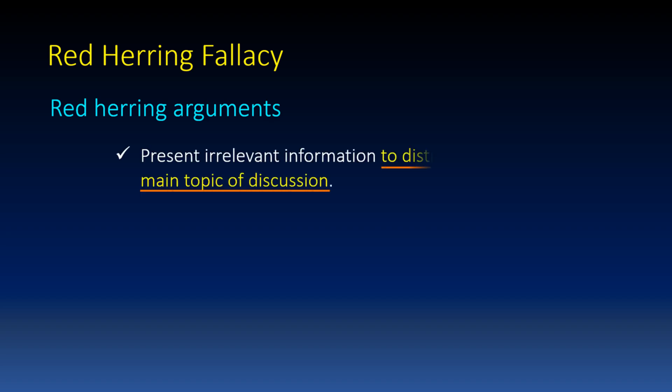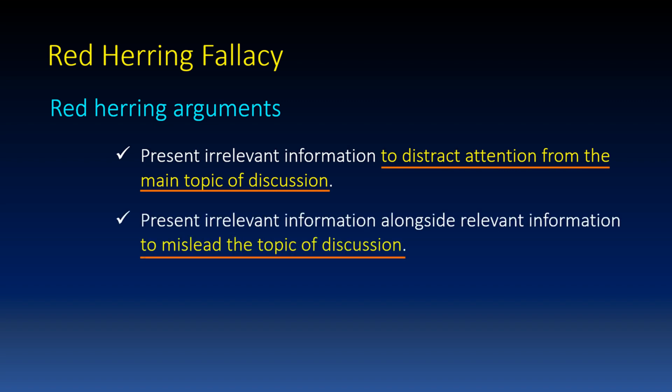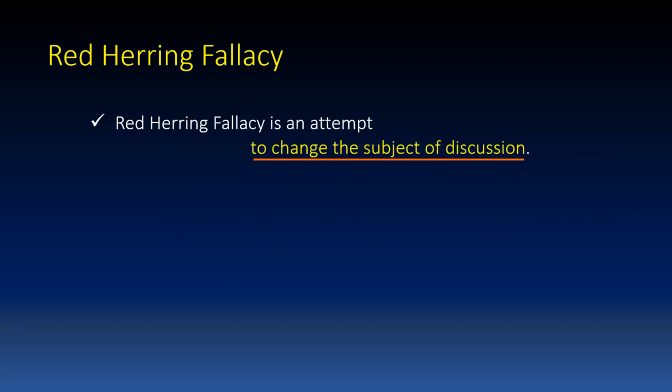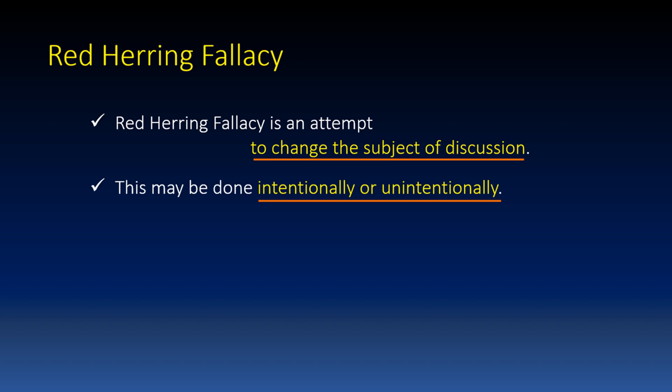What is a red herring fallacy? Red herring arguments present irrelevant information to distract attention from the main topic of discussion, or alongside relevant information to mislead the topic of discussion. A red herring fallacy is an attempt to change the subject of discussion, and this may be done intentionally or unintentionally.